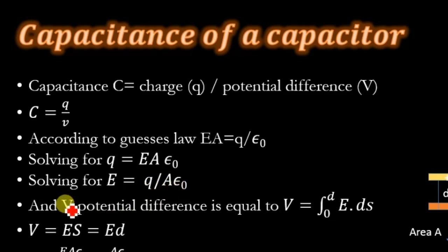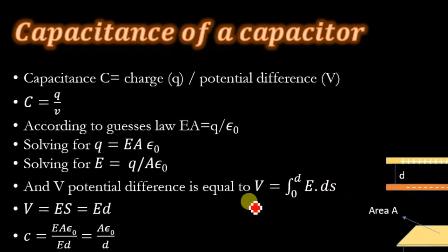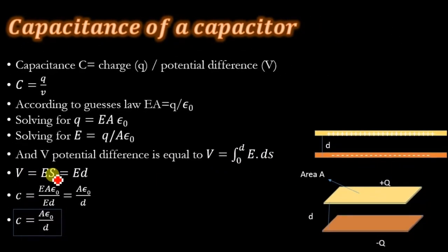For calculating the potential difference, we will integrate the electric field with respect to distance, integrating from 0 to d. Integrating the electric field E from 0 to d dot ds, we will get V = ES. Putting the value for s as d, we will get V = Ed.